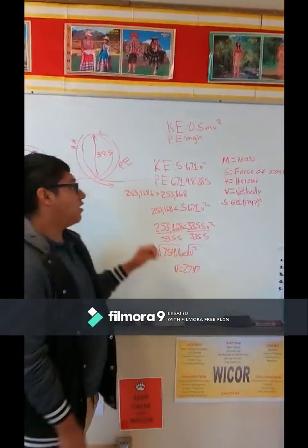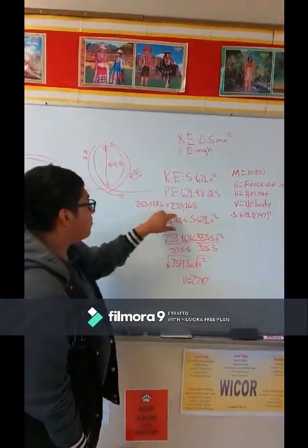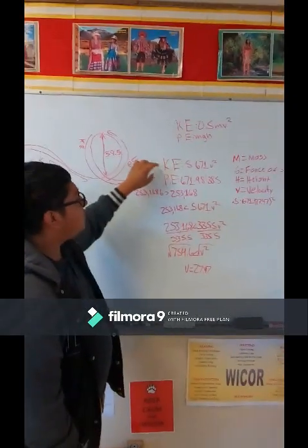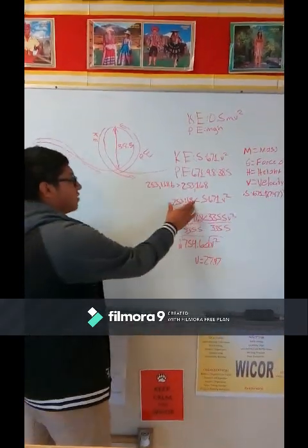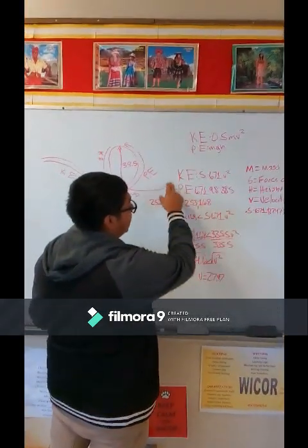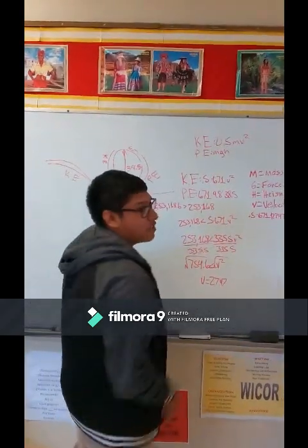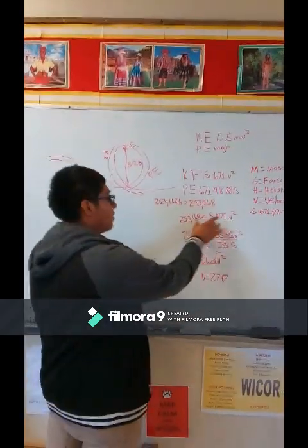Okay, so then we got 253,168. And so that's our potential energy now. To get our kinetic energy, it must be greater than the potential energy. And that would be 0.5 times 671 times velocity squared, since we don't know velocity yet. And so we solved for that.